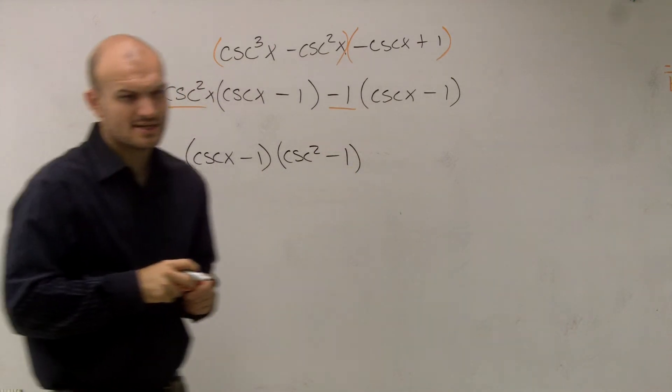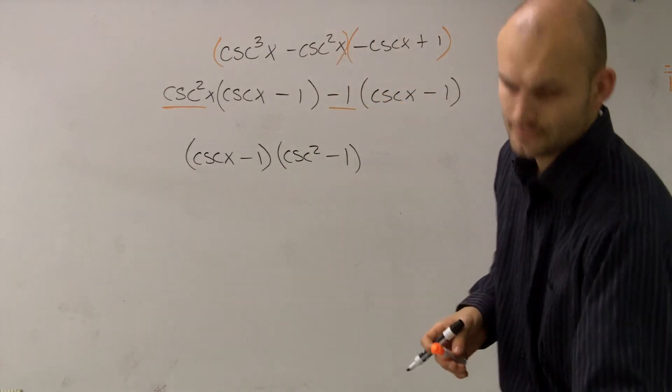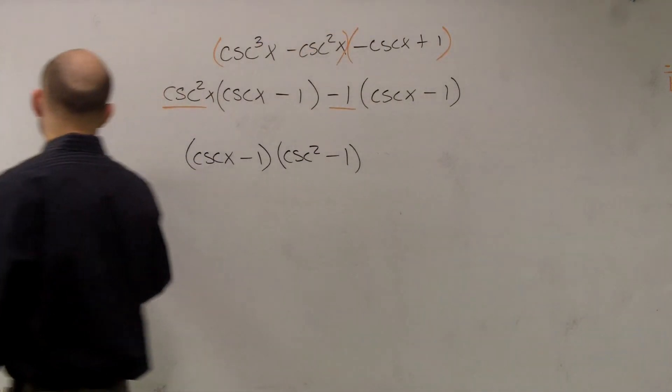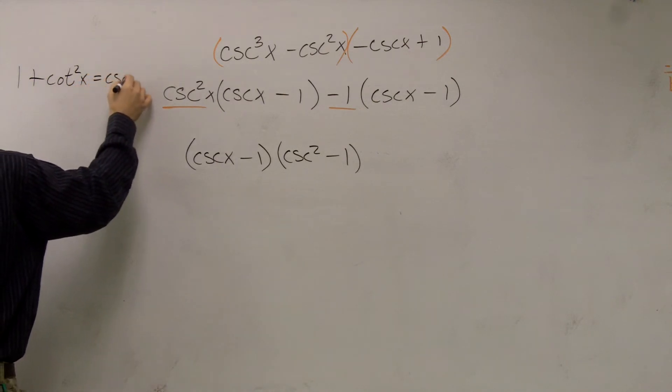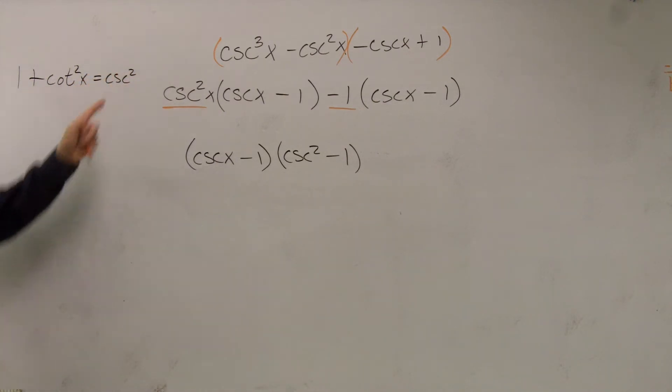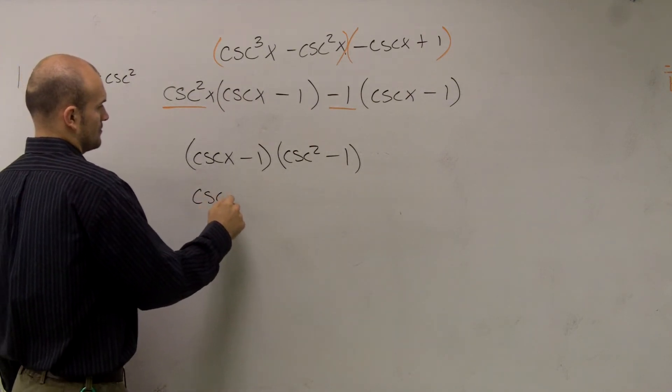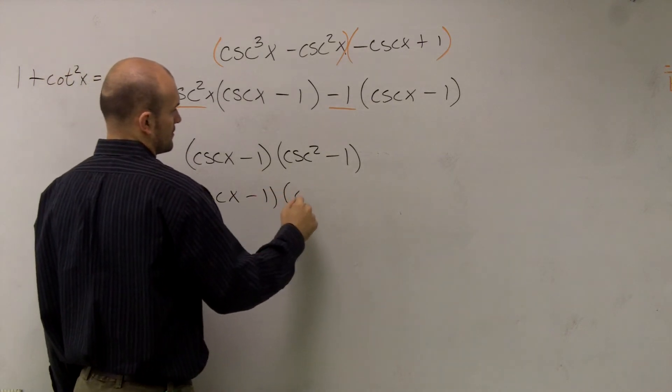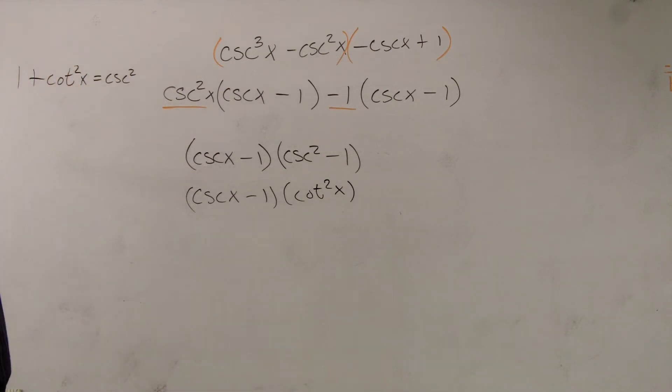Then I go ahead and take a look at this and I say, alright, well, what about cosecant squared of x? What is that going to equal? 1 plus cotangent squared equals cosecant squared. So cosecant squared minus 1 is going to equal cotangent squared, right?